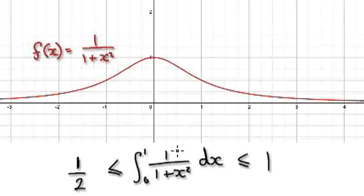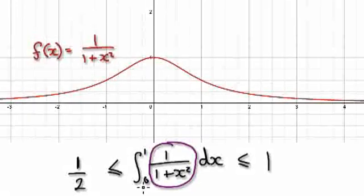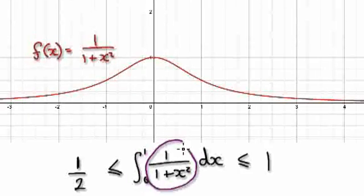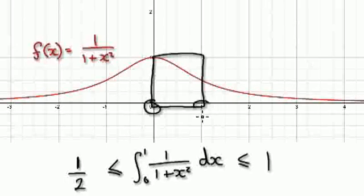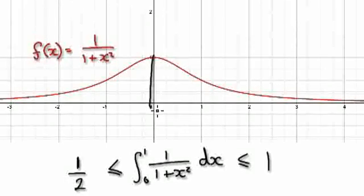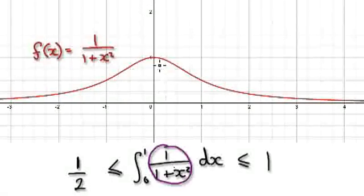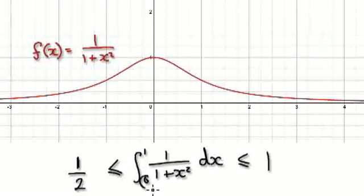Visualize this as being a function. In between zero and one, what is the biggest possible value that this thing here could be? Well, in between zero and one, we are looking at this region here. The biggest possible value that this thing could be is right here — it's when x equals zero. So the biggest possible value is when you put zero into this thing here.